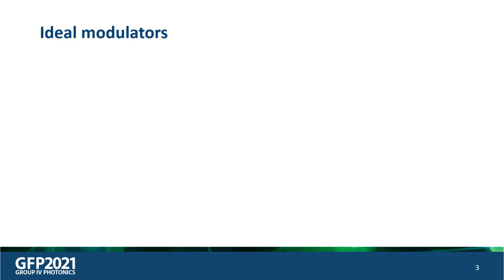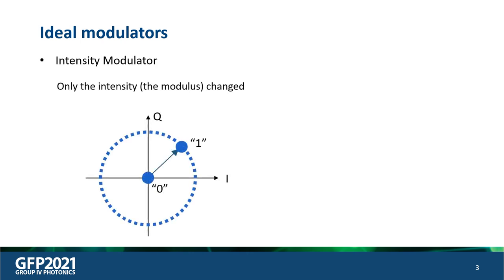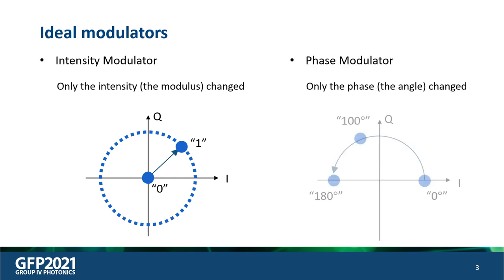For ideal modulators — for example, for an intensity modulator, we hope that only the amplitude of the signal can be changed, or in other words, it's just two dots in the phasor diagram. As well as for a phase modulator, we hope that only the phase of the signal is changed, which means that in the phasor diagram it shows a perfect circle on the IQ plane.